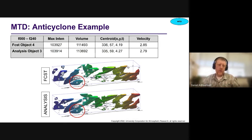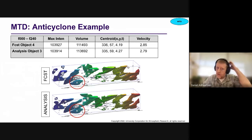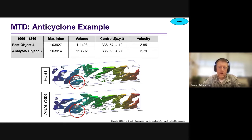If we take that MTD example and look at the different attributes that MTD provided — here I've circled two objects: object four from the forecast data set and object three from the analysis data set, which are geographically and temporally similar. Here you can see the maximum intensity for the forecast object was 1039 hectopascals, the analysis object was also 1039. You see the volume comparison, the centroid, and also the velocity of that object through time and space. You can see how it obtains these different attributes about the objects with the added time dimension.